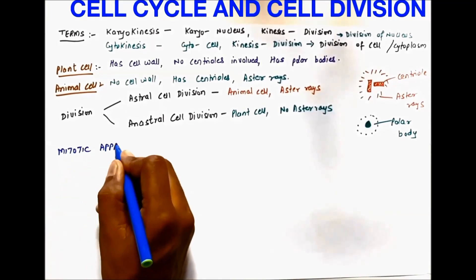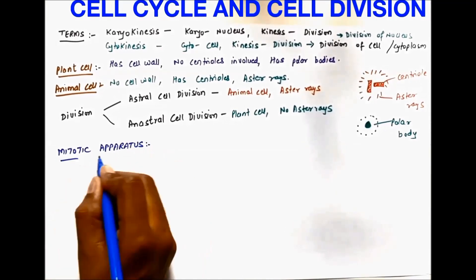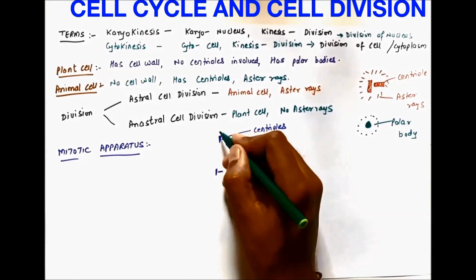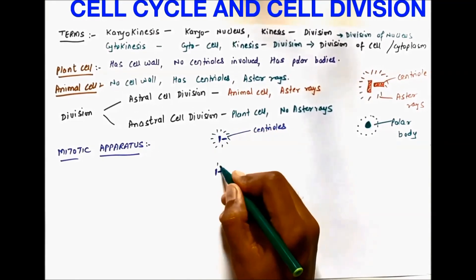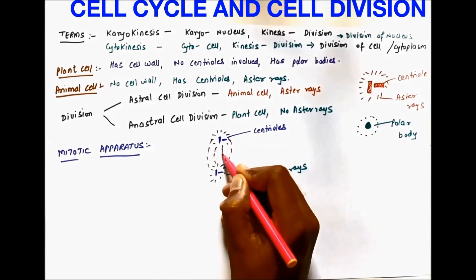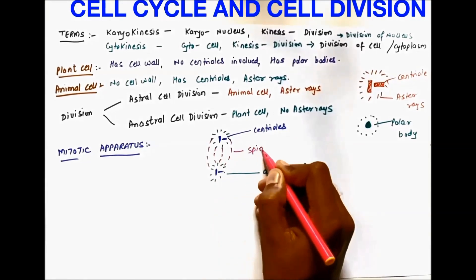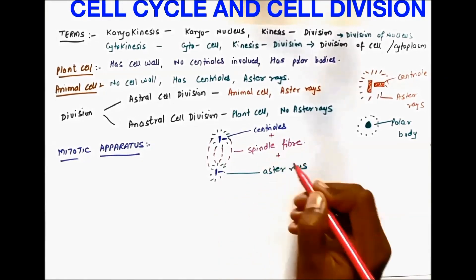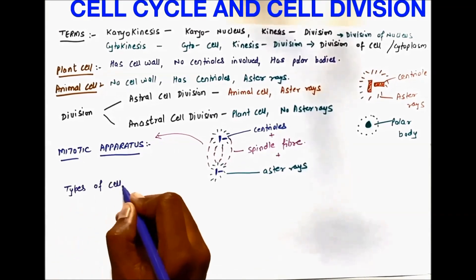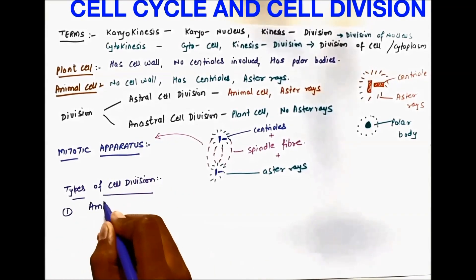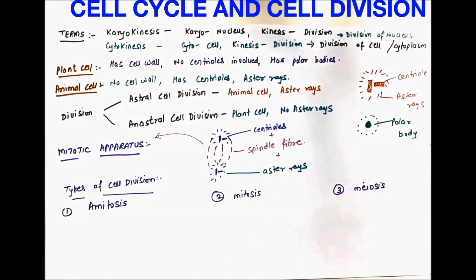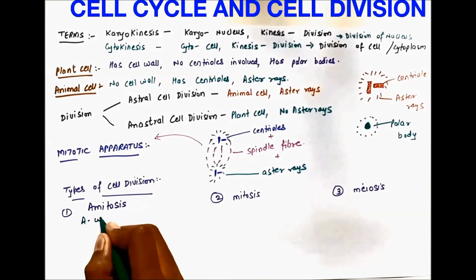The mitotic apparatus consists of centrioles, surrounding aster rays, and spindle fibers connecting both centrioles — this entire setup together is called the mitotic apparatus. There are three types of cell division: amitosis, mitosis, and meiosis.